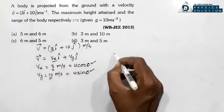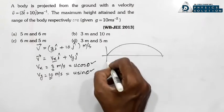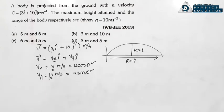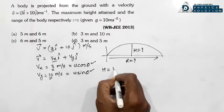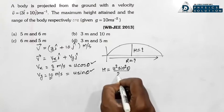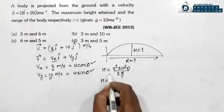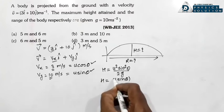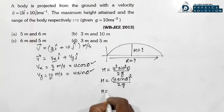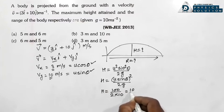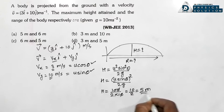Height ke liye formula: H = u² sin²θ / 2g = (u sinθ)² / 2g. H = (10)² / (2×10) = 100/20 = 5 metre. Height aati hai 5 metre.